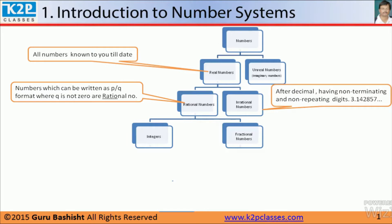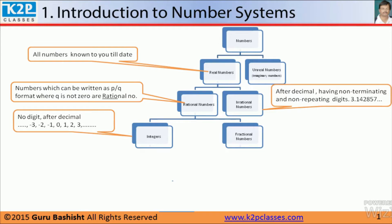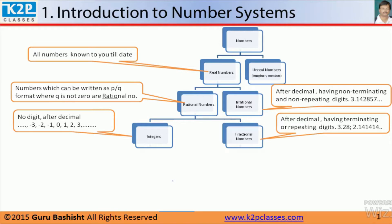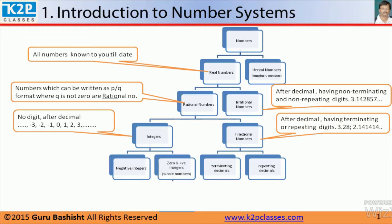Rational numbers can be grouped into two parts: integers and fractional numbers. Integers are numbers which don't contain anything after the decimal, like 3. Although 3 can be written as 3.0, it is an integer. Fractional numbers have terminating or repeating digits after decimal, like 3.28, 2.14, 1.4 repeating. This is also a fractional number because it is repeating. Integers can be grouped into two parts: negative integers and positive integers. Positive integers are also called whole numbers.